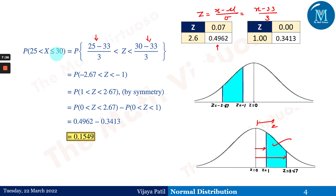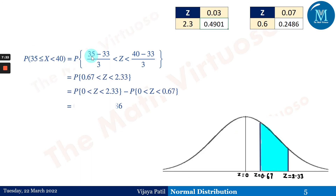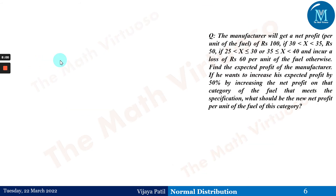Now we find the probability for X between 35 and 40. This corresponds to Z from 0.67 to 2.33. We compute P(0 < Z < 2.33) - P(0 < Z < 0.67) = 0.4901 - 0.2486 = 0.2415. So P(35 < X < 40) = 0.2415.